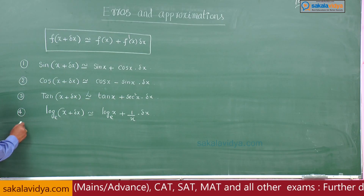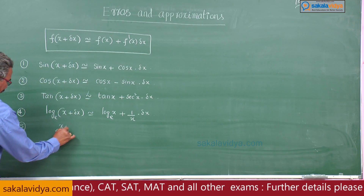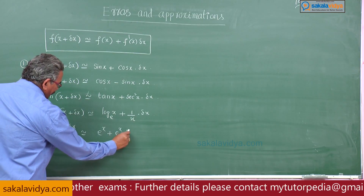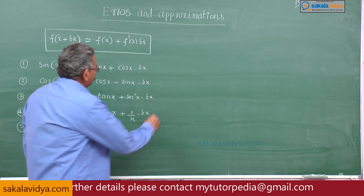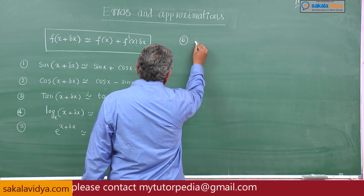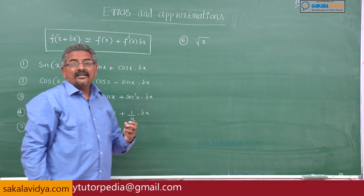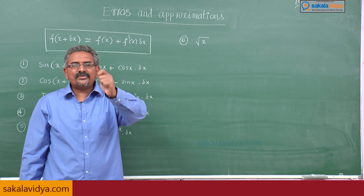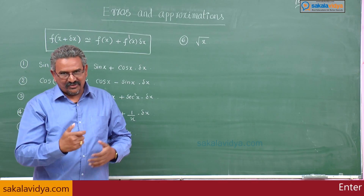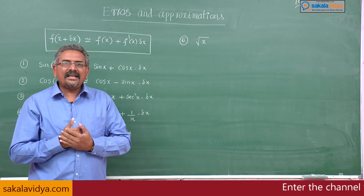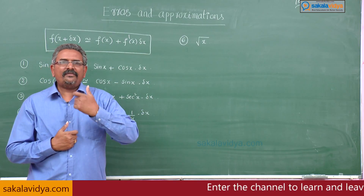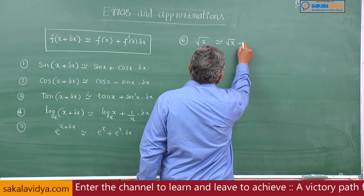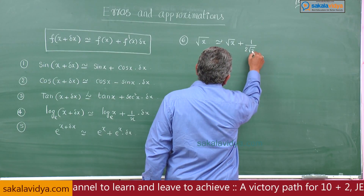Suppose if you want to find out e to the power x plus delta x, the approximate value is e to the power x plus e to the power x into delta x. Suppose if you want to find out root x — this is very important. The square root of any value can be evaluated using this shortcut; this may be used in your physics examination also. In entrance examinations you are not allowed to use calculators, so root of x plus delta x is approximately root x plus 1 by 2 root x into delta x.